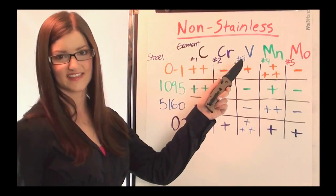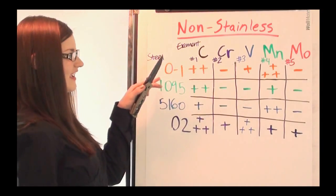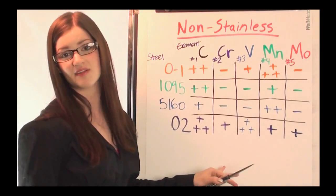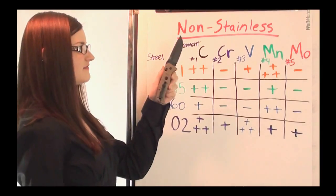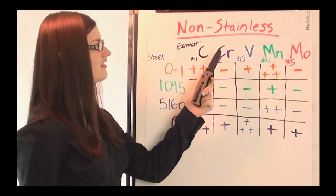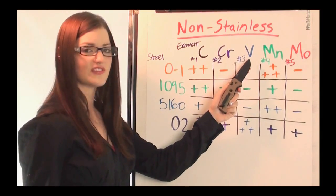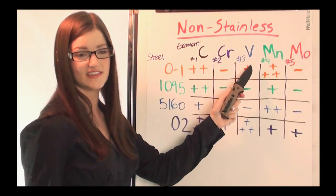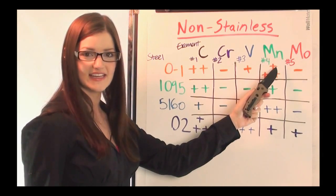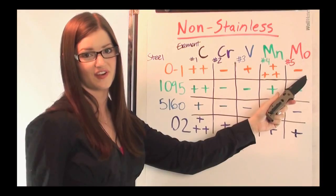Non-stainless steels. What makes them non-stainless is the fact that they have less chromium, and you can see I set up the chart the same way as the other one. We've got carbon here that's going to be relating to the strength of the steel. Chromium is that corrosion resistance. Vanadium helps the blade have an edge, and manganese will relate to the wear resistance. Molybdenum will help make the blade tougher.